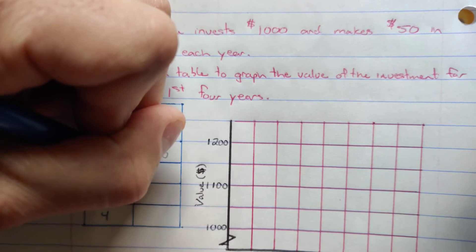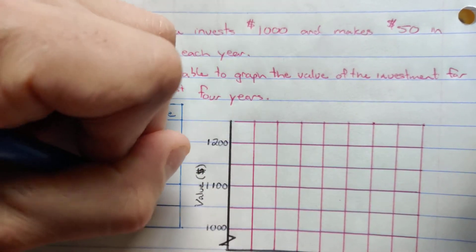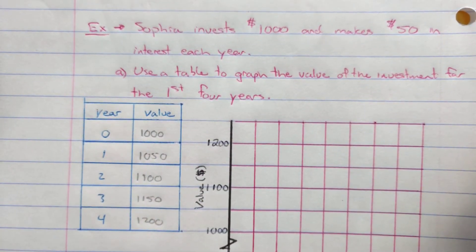After two years, she makes another $50 in interest. After three years, she makes another $50 in interest. And after four years, she makes another $50 in interest. We just keep adding $50 each time. That is our constant rate of change. She's making $50 a year.